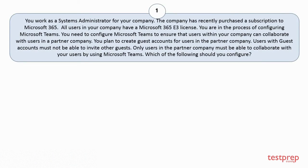Question 1. You work as a Systems Administrator for your company. The company has recently purchased a subscription to Microsoft 365. All users in your company have a Microsoft 365 v3 license. You are in the process of configuring Microsoft Teams. You need to configure Microsoft Teams to ensure that users within your company can collaborate with users in a partner company. You plan to create guest accounts for users in the partner company. Users with guest accounts must not be able to invite other guests. Only users in the partner company must be able to collaborate with your users by using Microsoft Teams. Which of the following should you configure?